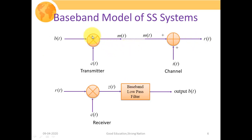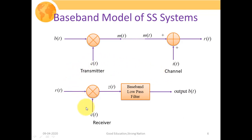This figure shows the transmitter block of the baseband model of the spread spectrum system. Any communication system has three parts: transmitter, receiver, and the channel interconnecting them. In the transmitter, a multiplier takes the chipping sequence CT as one input and the bit sequence BT as the other. They are directly multiplied to produce the modulated signal M(t).